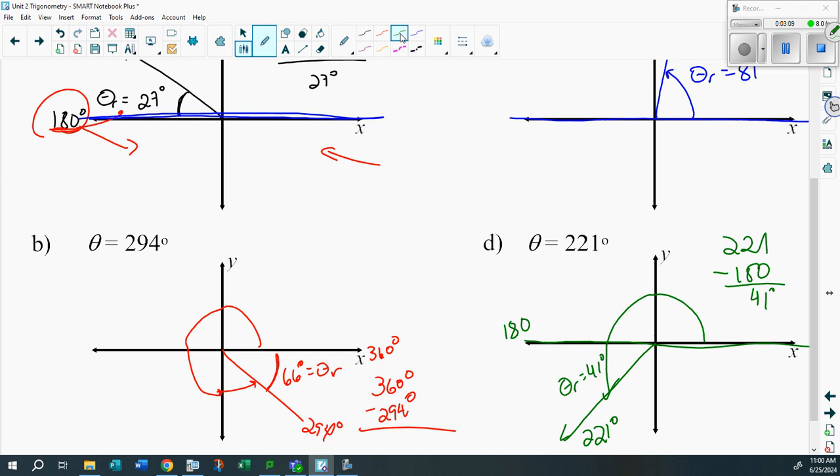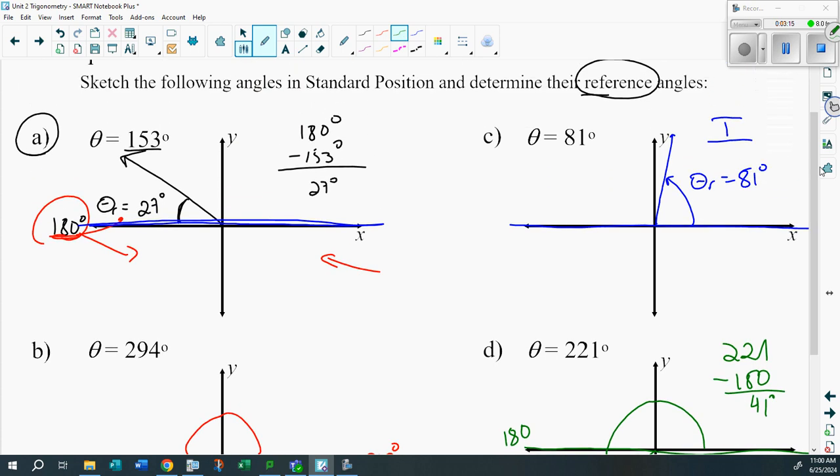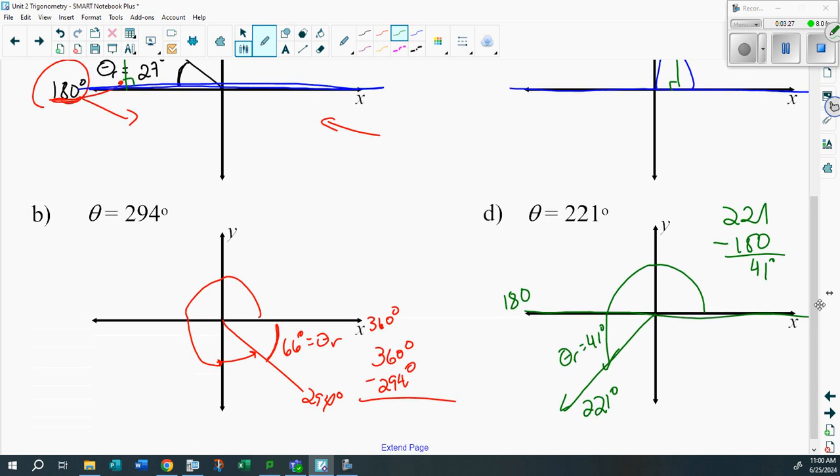Because every single one of these is going to make a right angle triangle. Do you see it? There's another right angle triangle, here's another right angle triangle, and here's another right angle triangle. It's all about the reference angles. That's what we're eventually going to get to. Stay tuned.